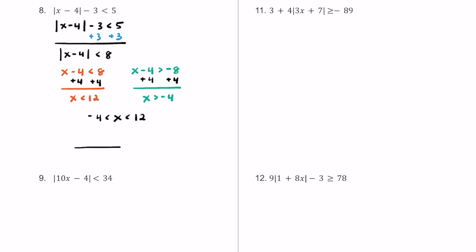Throwing this on a rough number line: here is negative 4, then 0 nearby, and positive 12 somewhere to the right. x is sandwiched between these two values, excluding negative 4 and 12.